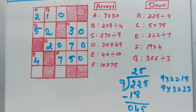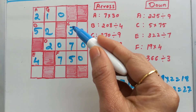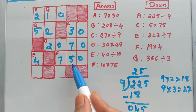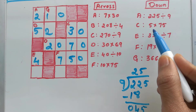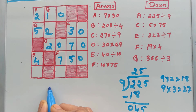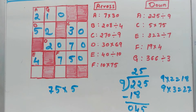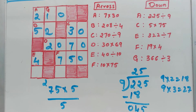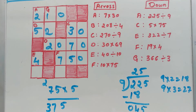Now down C: 5 times 75. We got the answer 375. Let's check: 75 times 5 — they are equal by commutative property. 5 times 5 is 25, carry 2. 5 times 7 is 35, plus 2 is 37. So 375 — that answer is correct.